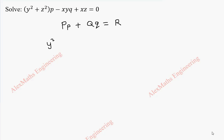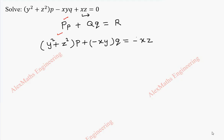So it is y square plus z square into p. From this we can understand what is capital P. In the same way, plus minus xy in a bracket then into q, so we can understand what is capital Q. And this term we take to the other side as minus xz, so we can understand what is R. So capital P is y square plus z square, capital Q is minus xy, and capital R is minus xz.